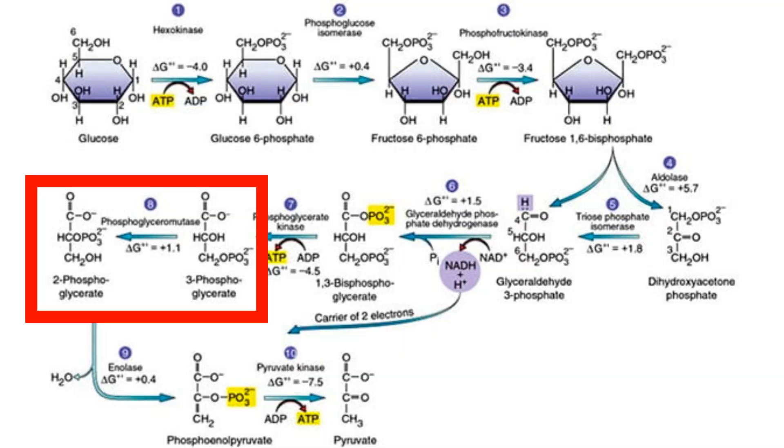Through another very long name, we get 2-phosphoglycerate, and if you want to know that name, it is this. Yeah, why does chemistry have to be so difficult?